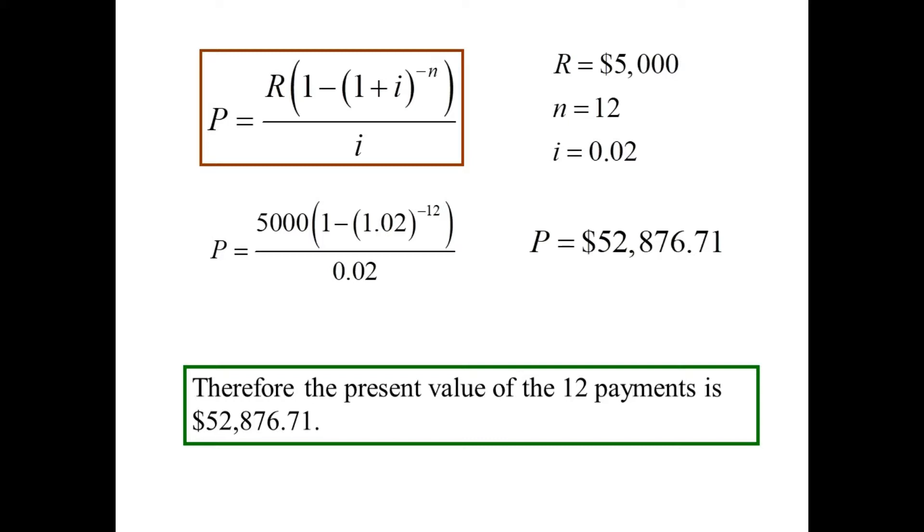If you invested $52,876.71 under these conditions, that would generate 12 payments of $5,000 each, which, by the way, is $60,000. But, again, present value is always less, because over time, the $52,000 matures.